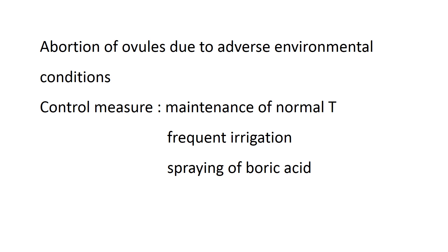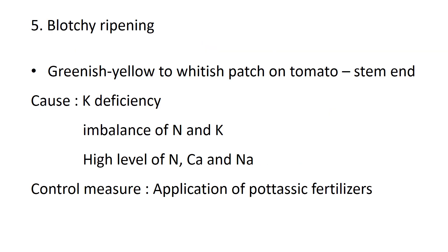Control measure for puffiness: maintenance of normal temperature, frequent irrigation, and spraying of boric acid. Blotchy ripening is the development of greenish-yellow to whitish patches on tomato, mostly on the stem-end portion. Cause is potassium deficiency; imbalance of nitrogen — high levels of nitrogen, calcium, and sodium — is also associated with blotchy ripening. Control measure is application of potassium fertilizers.